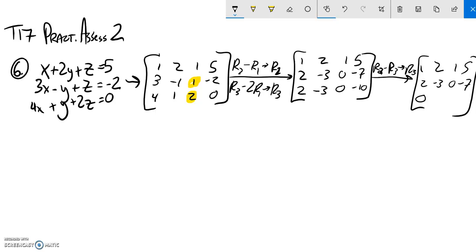2 minus 2 is 0. Negative 3 minus negative 3 is 0. 0 minus 0 is 0. Negative 7 minus negative 10, that's 3.